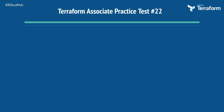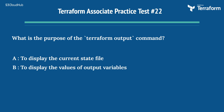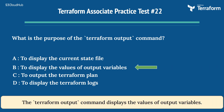The twenty-second question is: what is the purpose of the terraform output command? Option A: to display the current state file. Option B: to display the values of output variables. Option C: to output the Terraform plan. Option D: to display the Terraform logs. The right answer is Option B: to display the values of output variables. The terraform output command displays the values of output variables.